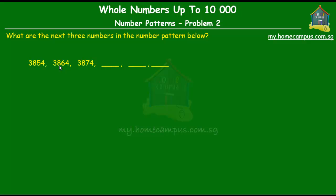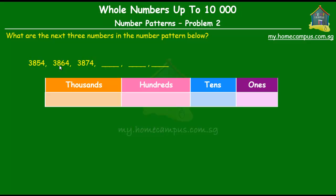Just by saying these numbers out loud, you can make out that there's a difference of 10 in going from one number to the next. But still, we'll use our place value chart just to make sure that that's the rule.